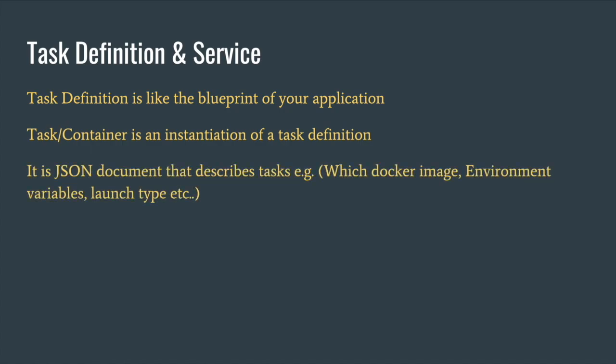As previously mentioned, in the task definition you specify the Docker image, environment variables, and launch type — this last one is very important. Are we going to use EC2 launch type or Fargate launch type? Do we want to manage the EC2 compute in our cluster, or just use Fargate and let AWS manage the compute? This launch type is specified in the task definition.